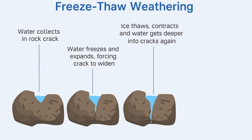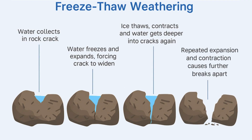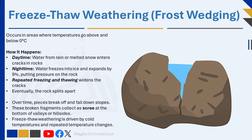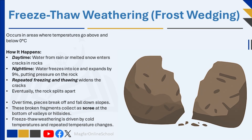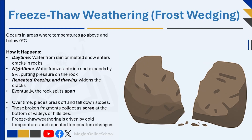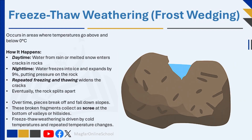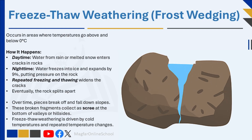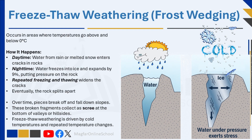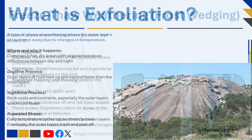Over time, this repeated freezing and thawing causes the cracks to widen, and eventually the rock breaks apart. After this process has happened many times, the rock can split in two. Each freeze-thaw cycle widens the cracks, and small rocks then fall down the side of the valley as scree. Freeze-thaw weathering is driven by cold temperatures and repeated temperature changes.